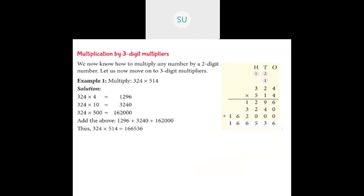We know how to multiply by a 2 digit number. With a 3 digit multiplier, we first multiply the multiplicand with the 1s digit, then the 10s digit, then the 100s digit — one extra step compared to 2 digit multiplication. Then we add all three answers. For example, 324 into 4 in the ones place: 4 fours are 16, write 6 carry 1; 4 twos are 8 plus 1 is 9; 4 threes are 12. So we get 1,296.